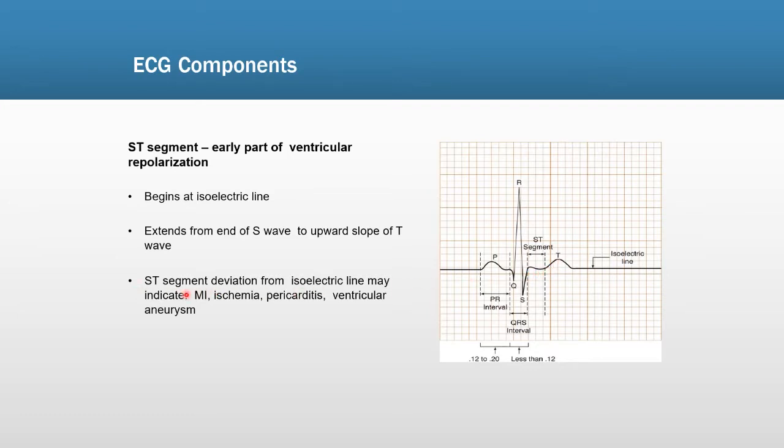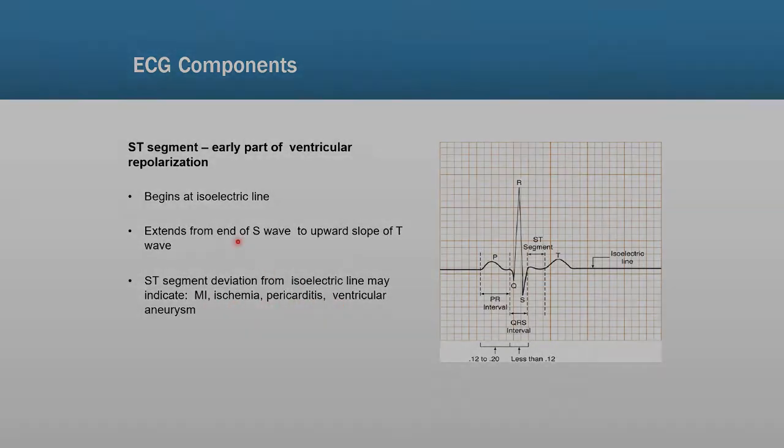ST-Segment deviation from the isoelectric line may indicate myocardial infarction, ischemia, pericarditis, or ventricular aneurysm.